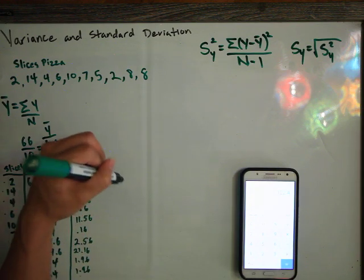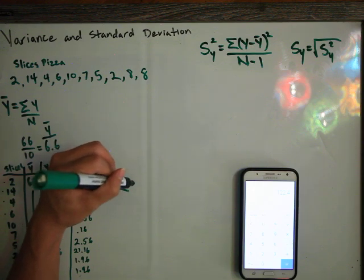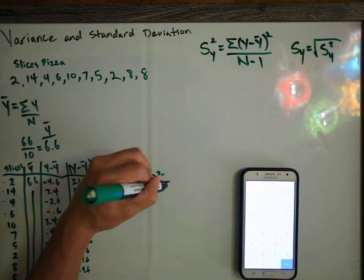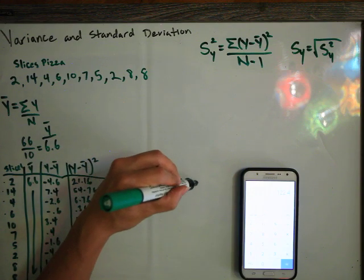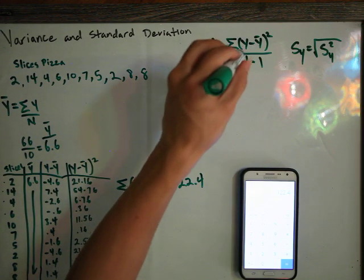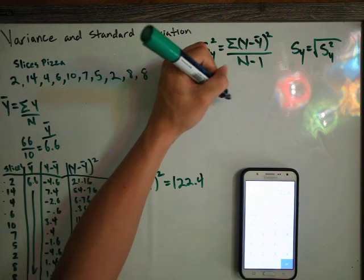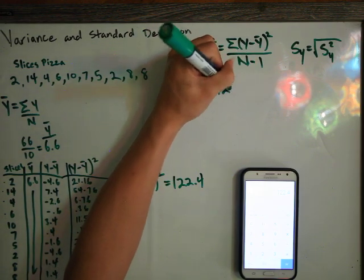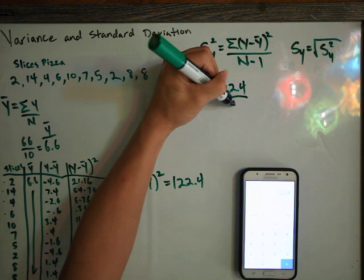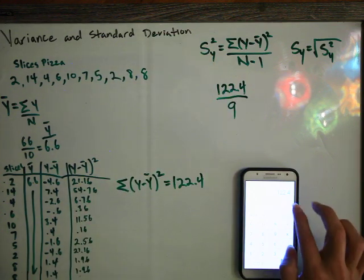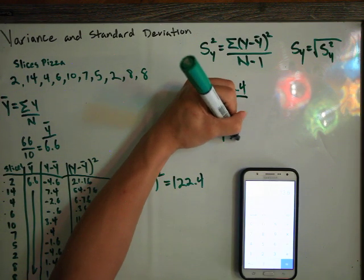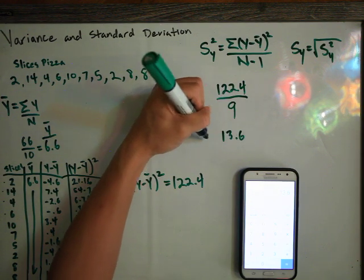And that gives us a value of 122.4 for the sum of all y minus y bar squareds. So that's the top portion of our variance formula. Now we have 122.4 divided by n, which is 10, minus 1, so that's 9. So we're going to take this number, 122.4, and divide it by 9. That gives us 13.6. This is our variance.